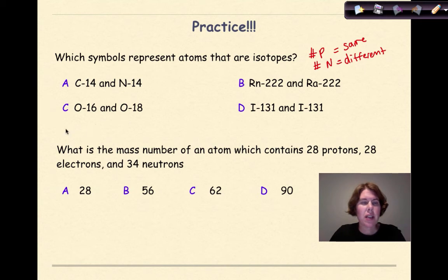I look through here and say, this is oxygen and that's oxygen, so that's a possibility. Carbon and nitrogen, not the same number of protons, so goodbye A. We go to B. Rn and Ra, really close, could be misleading, but not the same element. Plus the atomic masses are the same. So because the element symbols are not the same, not a possibility. And then we get to D, the I's are the same, so that's a potential possibility.